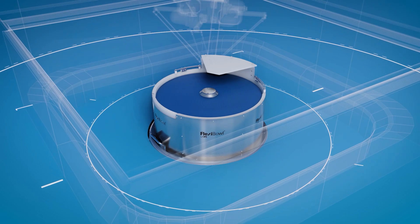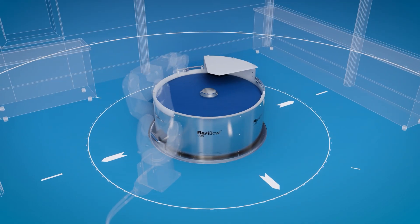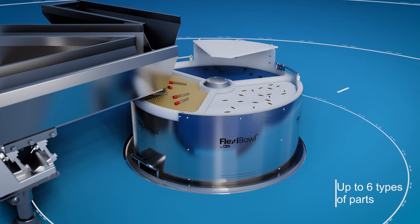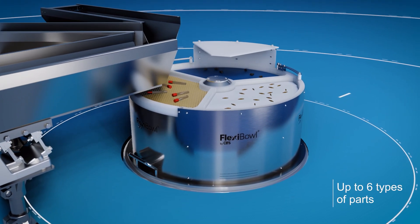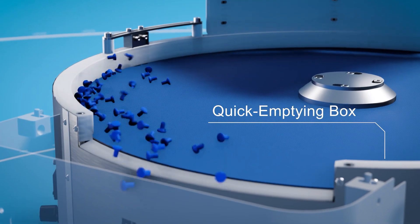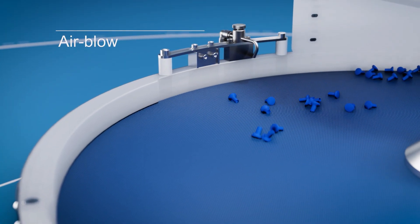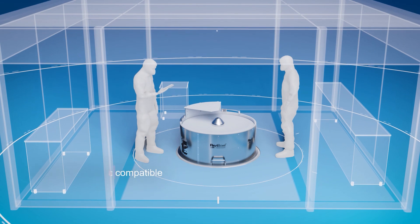FlexiBowl allows scalability and can be moved anywhere and can be easily equipped with additional options to keep up with the continuous changes of production. It can be equipped with quick emptying and edge diverter options and it is also available in cleanroom versions.